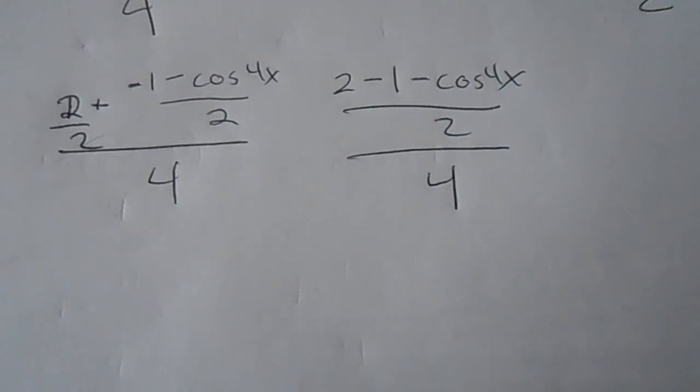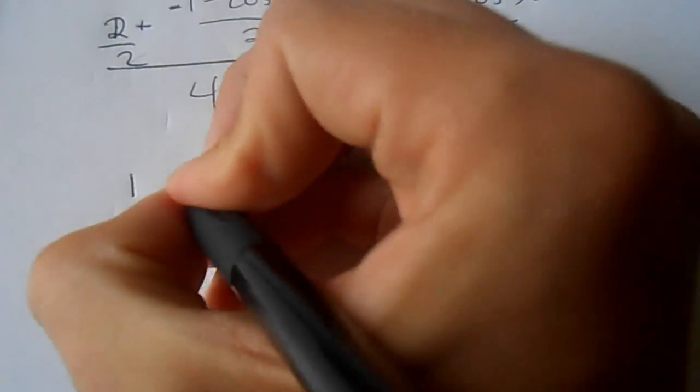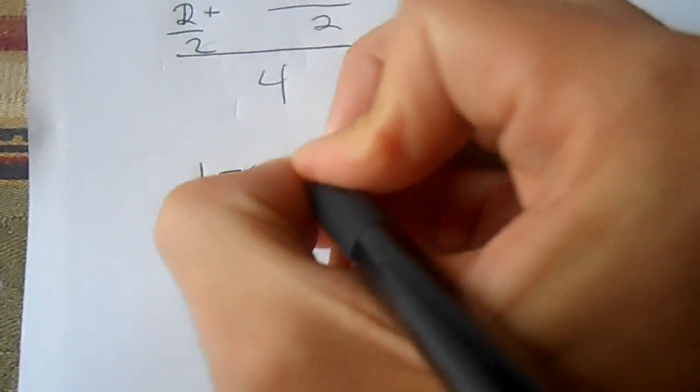And now you can see that you can combine like terms. 2 minus 1 would be 1. Now you just write down what's left.